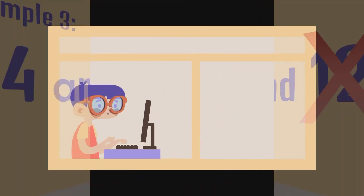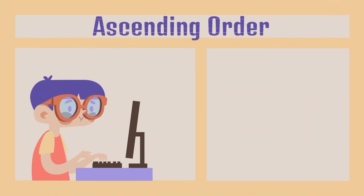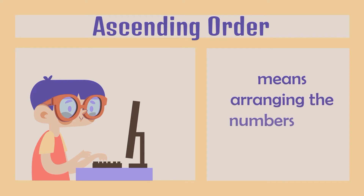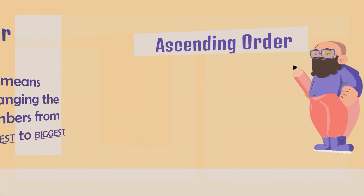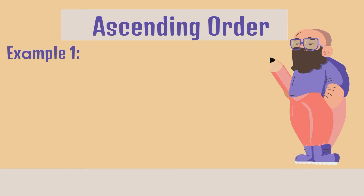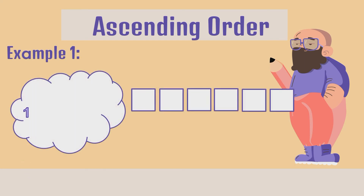Now that you know bigger and smaller number, let's proceed to ascending order. What is ascending order? Ascending order means arranging the numbers from smallest to biggest. Let's look at some examples and arrange the numbers from smallest to biggest. Example 1: We have 1, 25, 68, 95, 18, and 37.